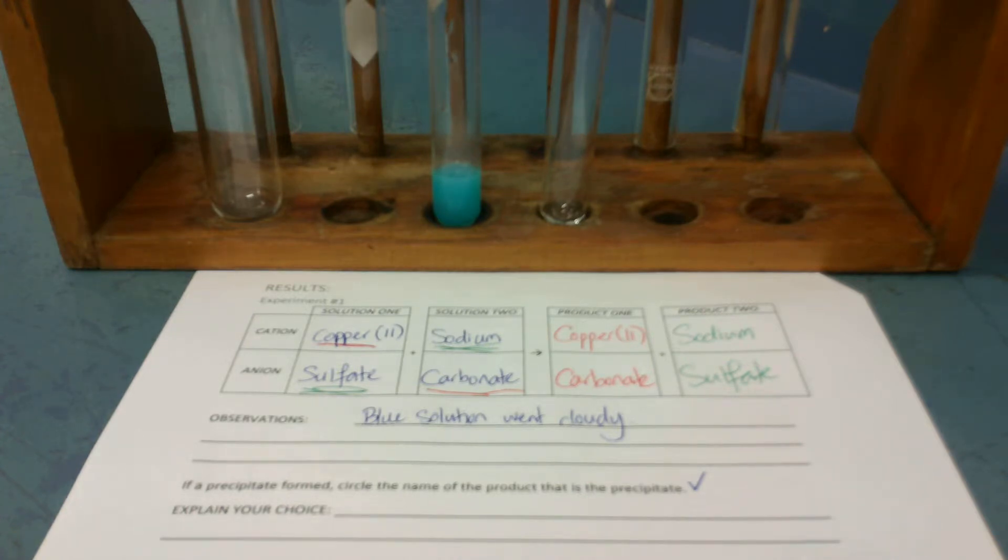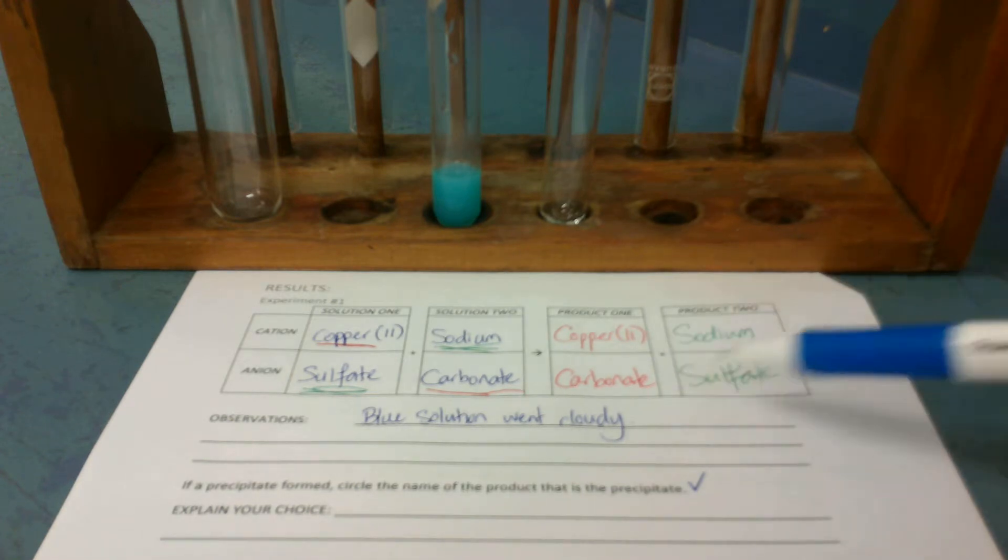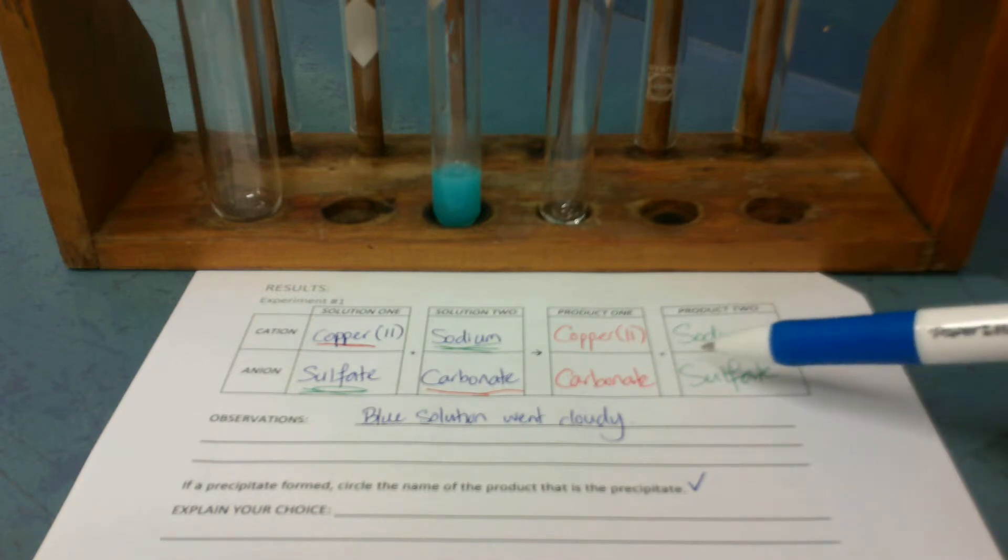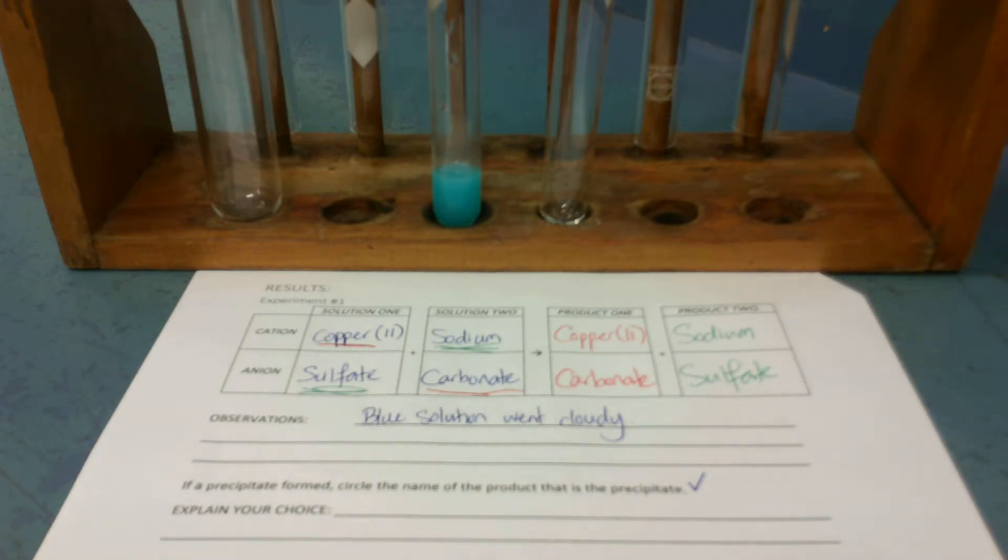All sulfates are soluble except... So BaSO4, PbSO4, and CaSO4. So they are barium, lead, and calcium. The thing that's made, is that one of those three? Is this one here that I'm circling one of those three that are not soluble? No. Okay, so that one hasn't made the precipitate.